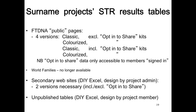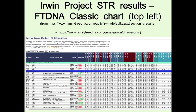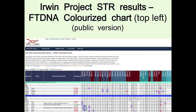Now, the first point: results tables. FTDNA does four different results tables. There's the classic one without colorization — it shows two groups, the Aberdeenshire branch and the borders branch. Then there's the colorized version, where the mode is shown for each group and differences are picked out in color — blue for less than modal value, pink for more. It's very useful but limited to just two colors.